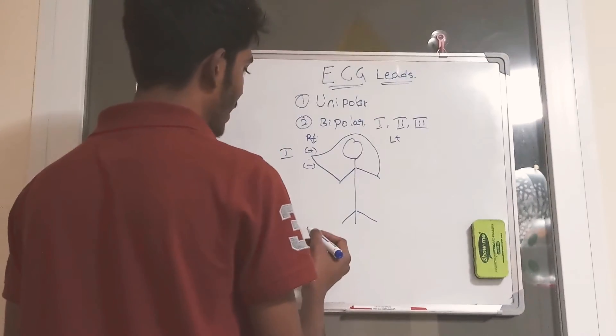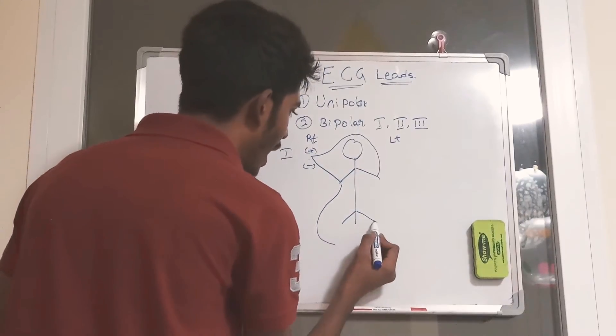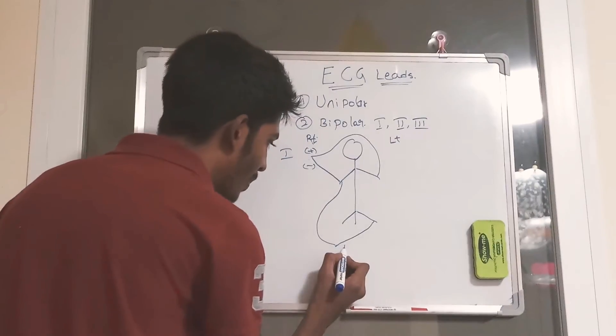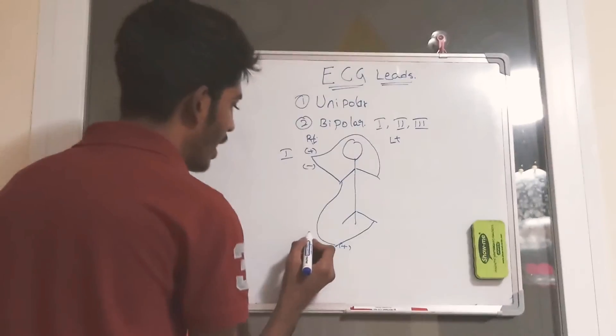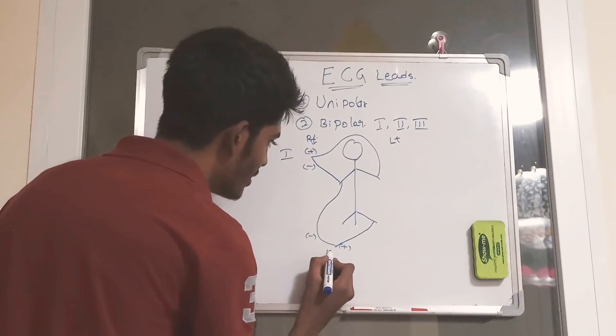Lead 2 is obtained by connecting right arm and the left leg. Left leg is connected to a positive electrode and right arm is connected to a negative electrode. This is lead 2.